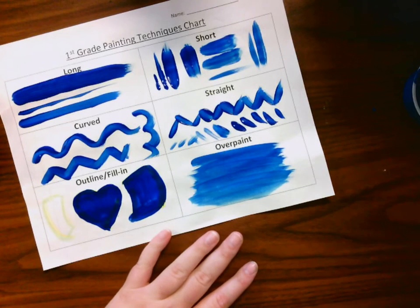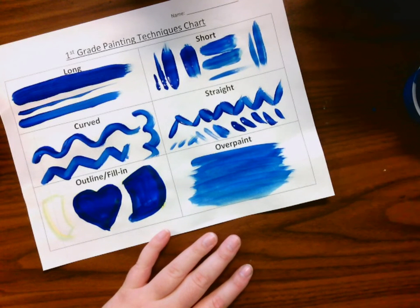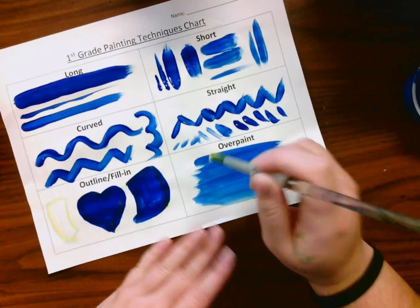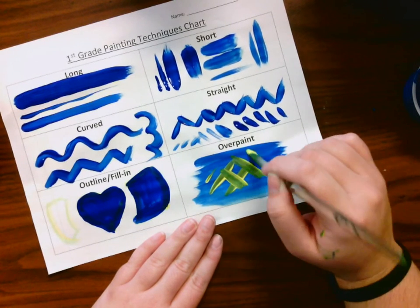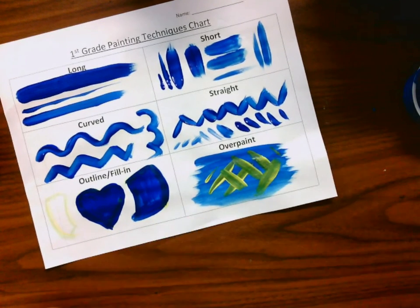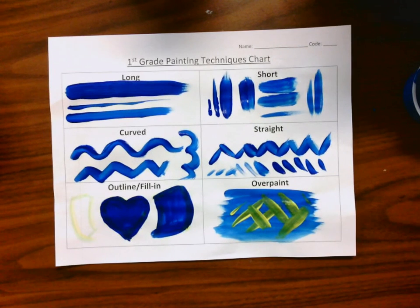The last thing I'm going to do is overpaint. Instead of washing off my paintbrush and blotting off my paintbrush with extra water, and then overpaint. It means that you're just going to paint details on top of another color. They can be different types of lines, they can be different shapes, whatever works for you. So first grade, if you have any questions, let me know. But these are your painting techniques. You're going to get started.